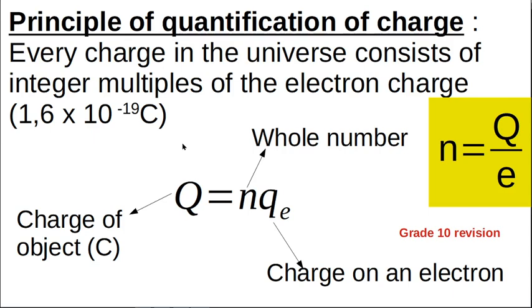Then there was that guy Millikan who ran that oil drop experiment and he found out that every charge in the universe consists of integer multiples of the electron charge. So the charge on an electron is negative. So this is the charge on the electron. You'll find it on your data sheet and the amount of charge on your object, big Q, is equal to an integer multiplied by the charge of an electron.